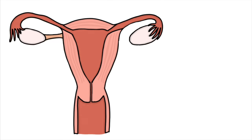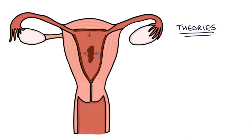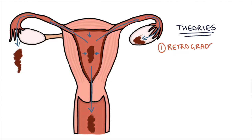We don't really know what causes endometriosis and there's no real cause that's been proven, but there are several theories. One key theory is that during menstruation, as the endometrial lining starts to break down and usually comes out through the cervix and into the vagina, in some women it might actually flow backwards through the fallopian tubes and out into the pelvis. We call this retrograde menstruation. The endometrial tissue then seeds itself and you can get little pockets of endometrial tissue.